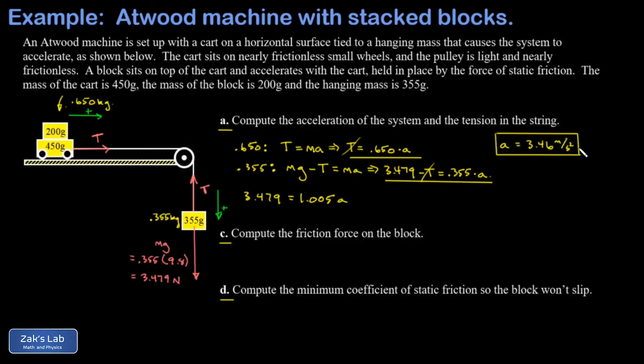Now, one sort of crude check that you can always do on your work is to verify that your acceleration is less than freefall. Because for the hanging mass, the fastest it could ever fall is freefall, but there's a tension pulling up on it and it's slowing it down. So we at least passed that test. Next, we get the tension in the string.